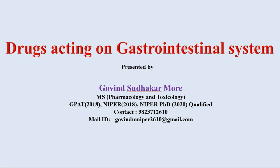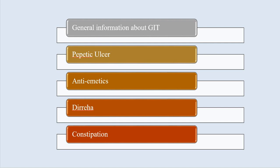In our today's lecture we discuss the following points. First one is the general information about the gastrointestinal tract. Then what is meant by peptic ulcer and which drugs are used to treat the peptic ulcer. Third one is the emetics and anti-emetics and the mechanism of vomiting. Then diarrhea — due to microbial contamination and other reasons like food poisoning — and what kind of drugs are used to treat diarrhea. And last one is constipation. Apart from that we'll also see inflammatory bowel disease.